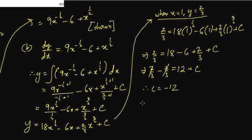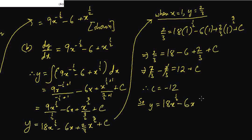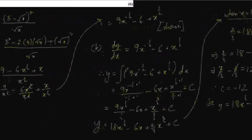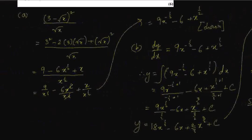Now we can write down the answer. So y equals to 18x to the power half, minus 6x, plus 2/3 x to the power 3/2, minus 12. So this sum is done.